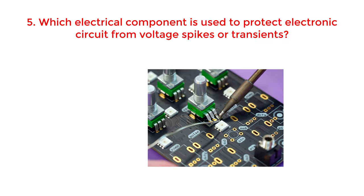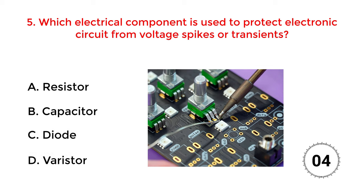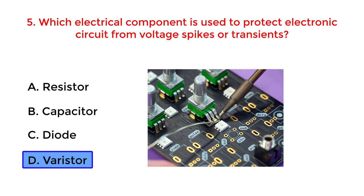Which electrical component is used to protect electronic circuits from voltage spikes or transients? A. Resistor. B. Capacitor. C. Diode. D. Varistor. The correct answer is option D: Varistor.